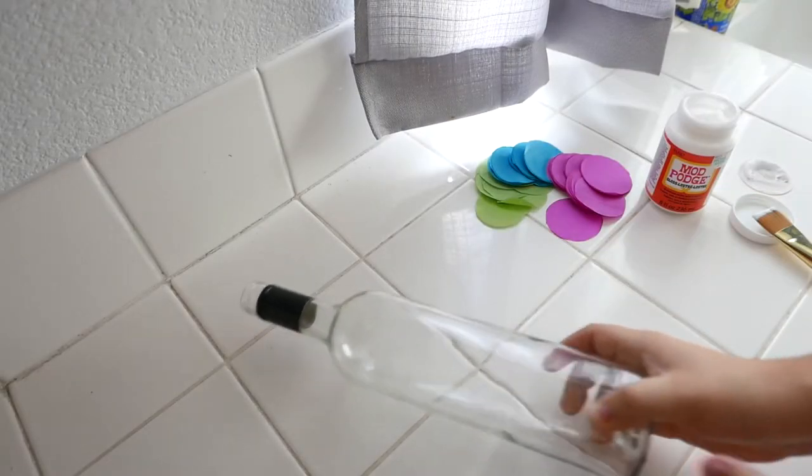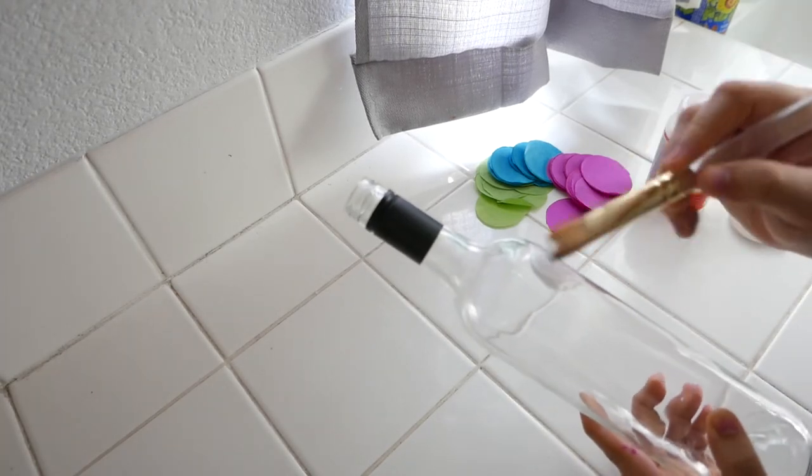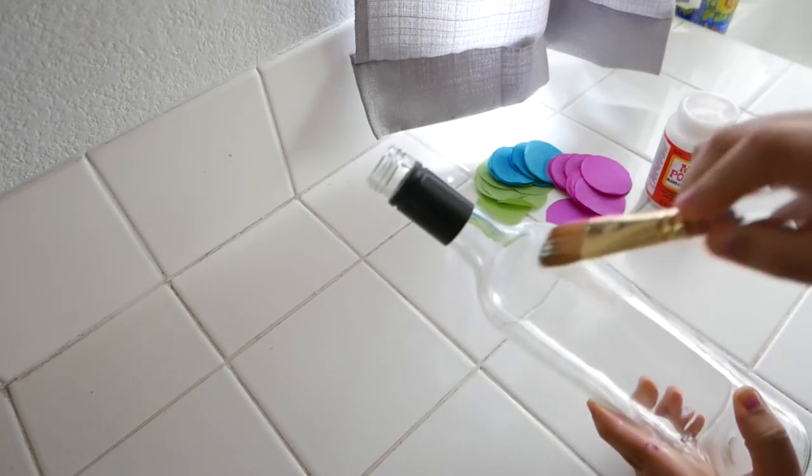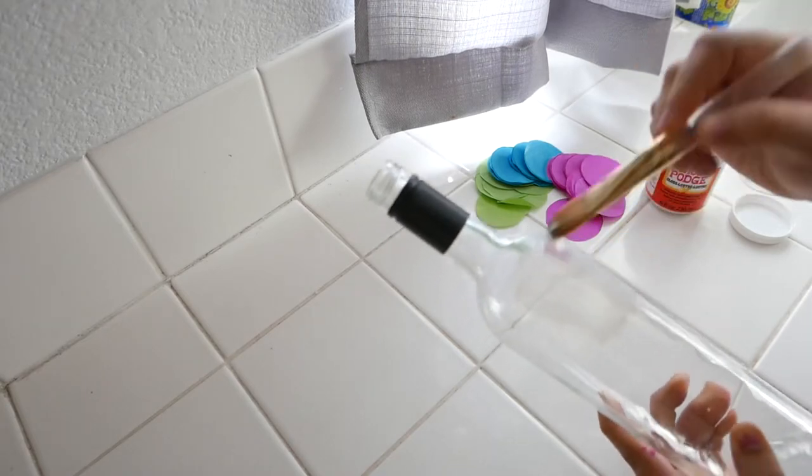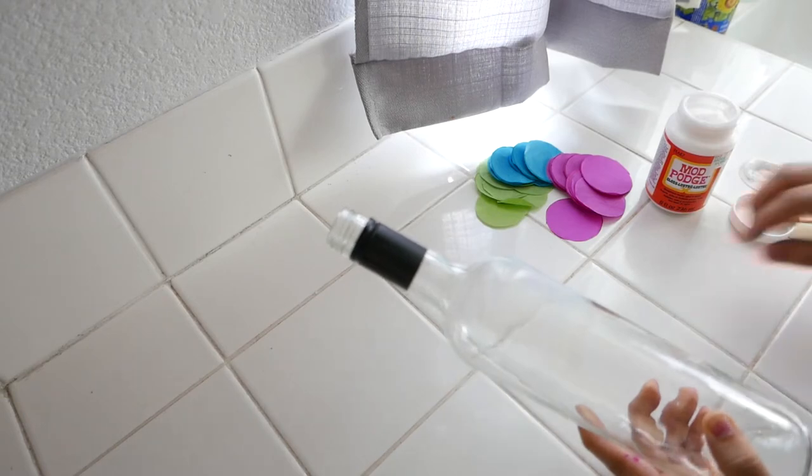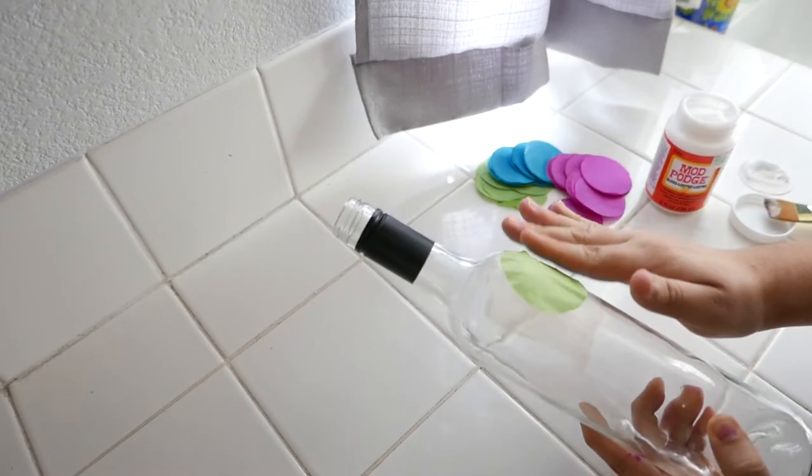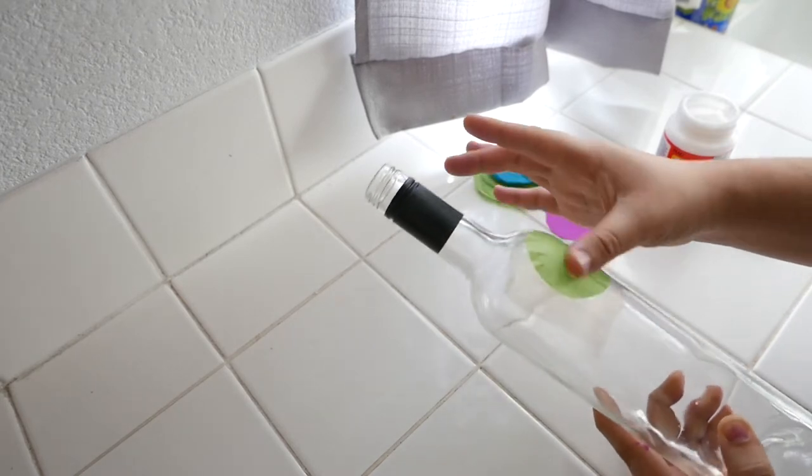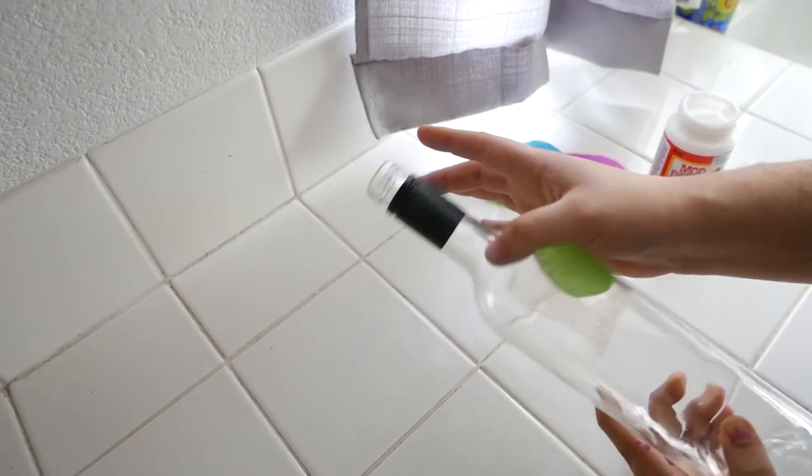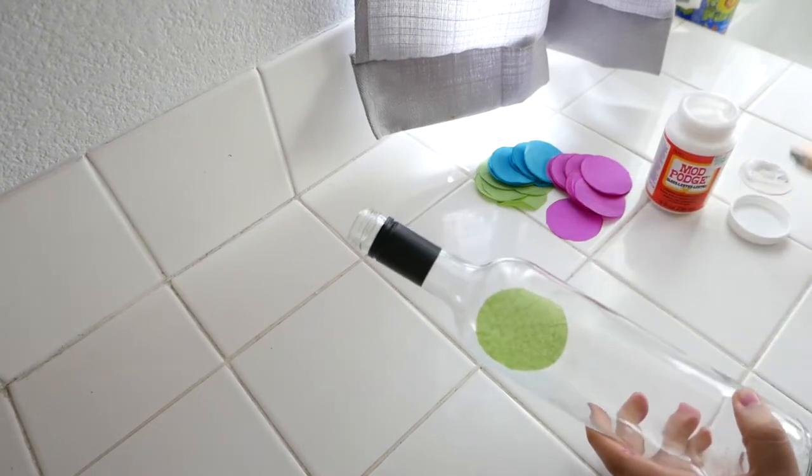So as you can see I have all of my supplies laid out in front of me and the first thing I'm going to do is apply a thin layer of the Mod Podge to the wine bottle and I'm going to be doing it in chunks. So I'm going to be starting at the top and again it's a matter of applying a thin layer and because the tissue itself is very thin, placing it on and then rubbing it on gently. And then just making sure that it adheres to the surface and getting rid of any bubbles. And as you can see that's what that looks like.